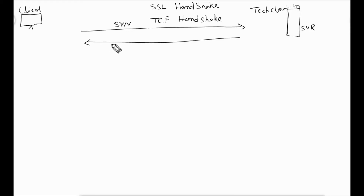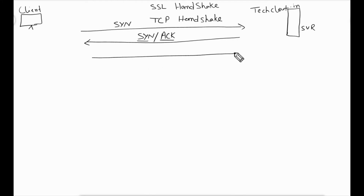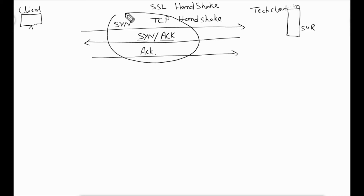In the TCP handshake, the client sends a SYN packet to the server. The server replies with a SYN-ACK packet, meaning the server is synchronizing and acknowledging the packet. Then the client replies back to the server. This is how the TCP handshake happens. A separate video on TCP handshake is linked in the description.